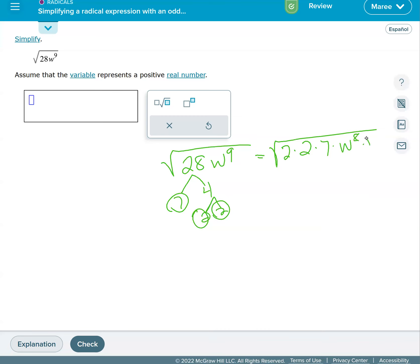So take a second and look at this. This is actually 28w to the ninth. I just broke it all the way down. Four times seven is 28, w to the eighth times w is w to the ninth.